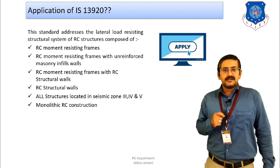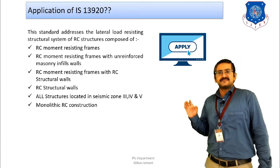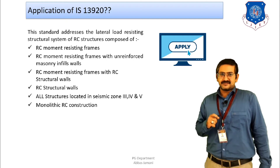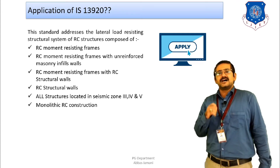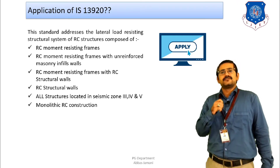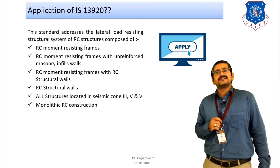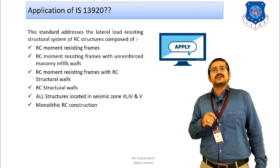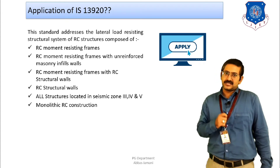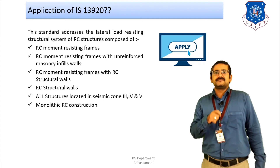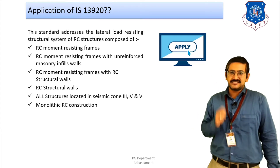IS 13920 covers four types of lateral load resisting systems for RCC structures. The first is the RCC moment resisting frame system consisting of beams and columns only. Second is the RC moment resisting frame system along with unreinforced masonry infill walls acting only as partition walls. Third is RC moment resisting frames with structural walls — a combination of columns and shear walls. Fourth is RCC structural walls only, with no columns, just shear walls.